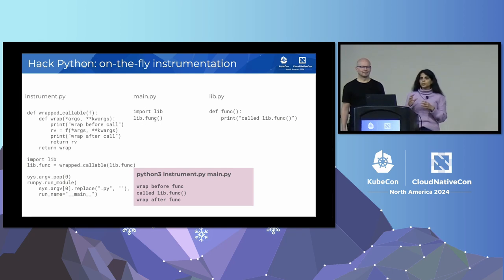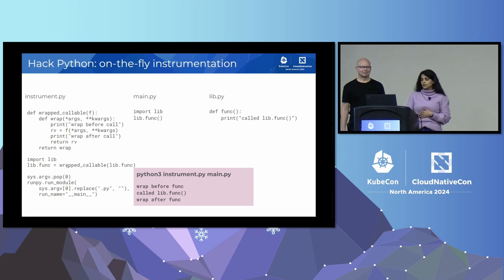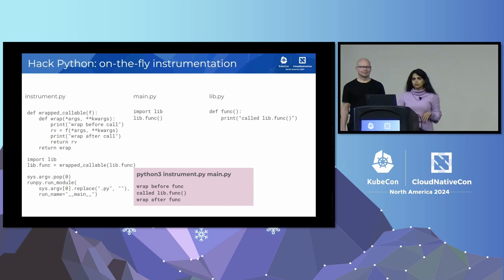What you want to do is print a statement before the function is called and print a statement after it. So you add a wrapper method and pass your main function — the original function — as a parameter, print some custom logic before it, call the function, then print some custom logic after it. This line is where the magic happens: you pass your original function lib.func into the wrapper, and then you assign the value returned from this wrapper back to the original function. This is how you can use the decorator pattern to modify third-party libraries without actually modifying them.